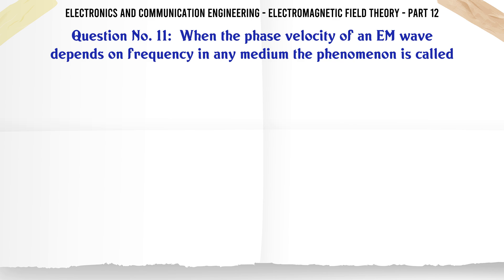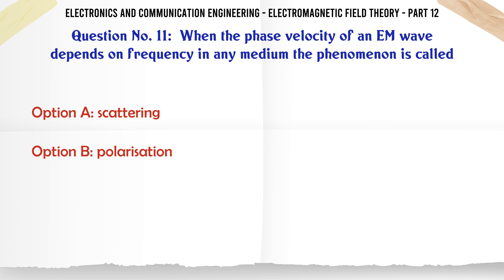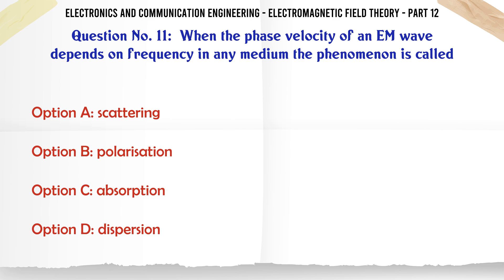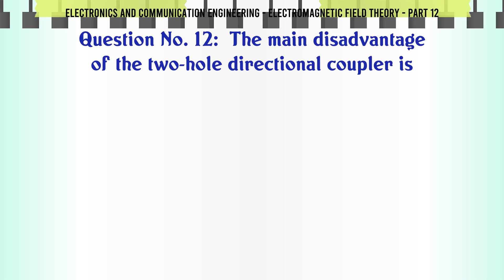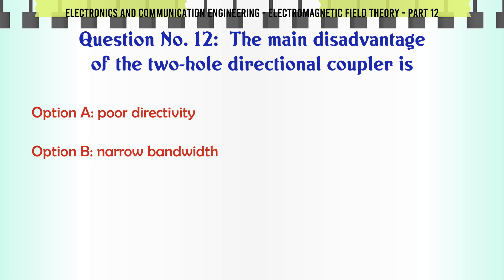When the phase velocity of an EM wave depends on frequency in any medium, the phenomenon is called: A. Scattering, B. Polarization, C. Absorption, D. Dispersion. The correct answer is Polarization.